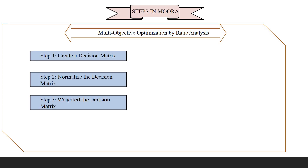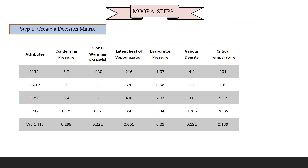The steps involved in MOORA are: Step 1 is to create the decision matrix, Step 2 is to normalize the decision matrix, and Step 3 is the weighted decision matrix. Let's start with Step 1.